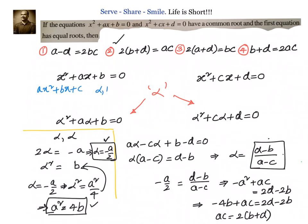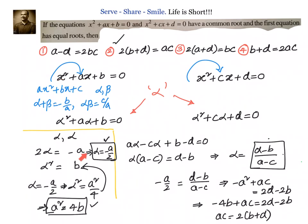For a quadratic x² + bx + c with roots alpha and beta, alpha + beta = −b/a and alpha·beta = c/a. Applying this to the first equation with equal roots alpha, alpha: 2·alpha = −a, so alpha = −a/2, and alpha² = b, giving a² = 4b. Combined with alpha = (d − b)/(a − c) and cross multiplication, we get ac = 2·(b + d).